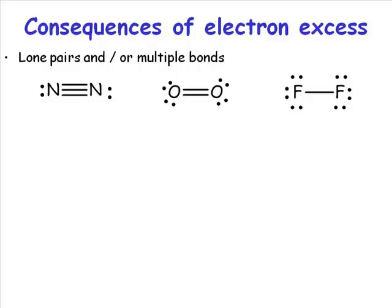The consequences of electron excess are either lone pairs and/or multiple bonds. You're always going to have lone pairs. Whether or not you get multiple bonds depends on the size of your element.